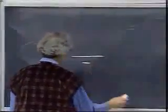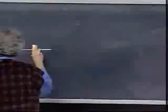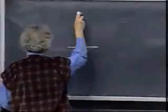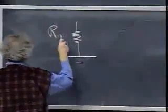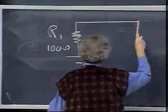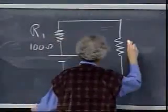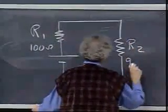I have here a battery, and the battery has an EMF of one volt. Here is a resistor R1, which is 100 ohms. And here is a resistor R2, which is 900 ohms.